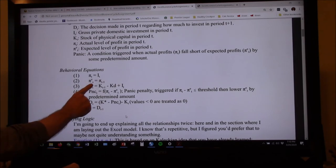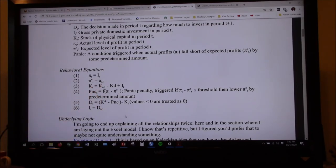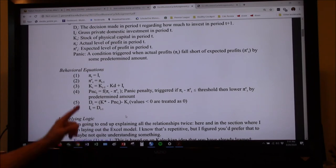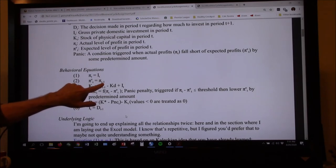Now, what people expect profits to be is what they actually were last quarter. This is coming from one of Keynes' statements that, for the most part, people just assume that existing conditions are going to continue unless there's some compelling reason to believe otherwise. So what we expect in period T is a continuation of what happened in period T minus one.